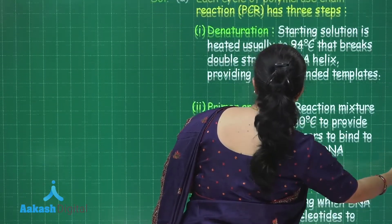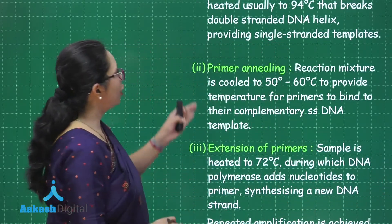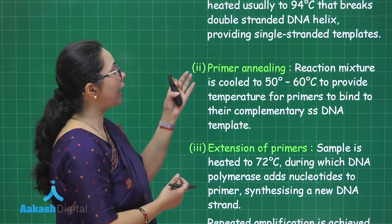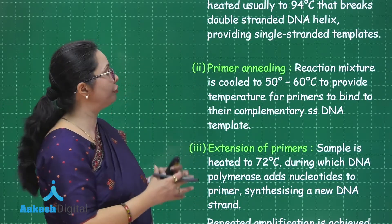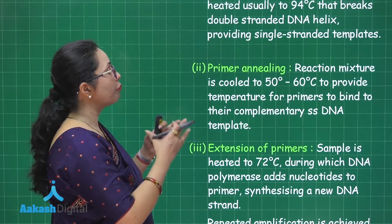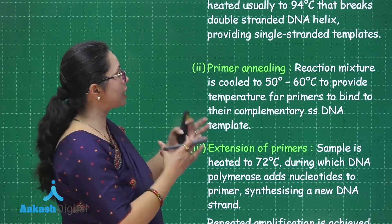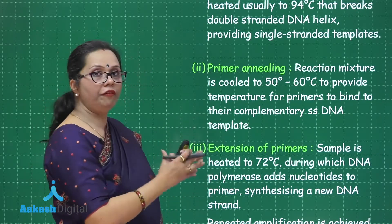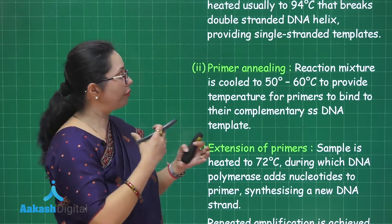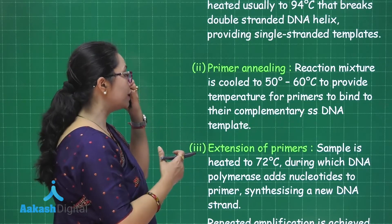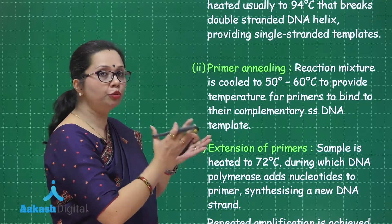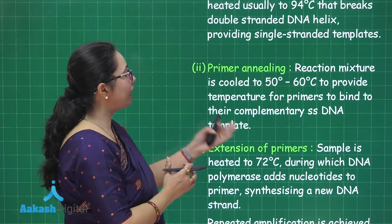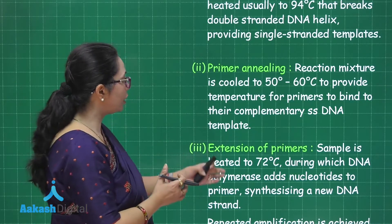Denaturation is followed by primer annealing. The reaction mixture is cooled down to 50 to 60 degrees Celsius. Primers are single-stranded DNA sequences prepared after sequencing the target DNA from its ends. These primers anneal — meaning they bind to the target DNA by forming hydrogen bonds.